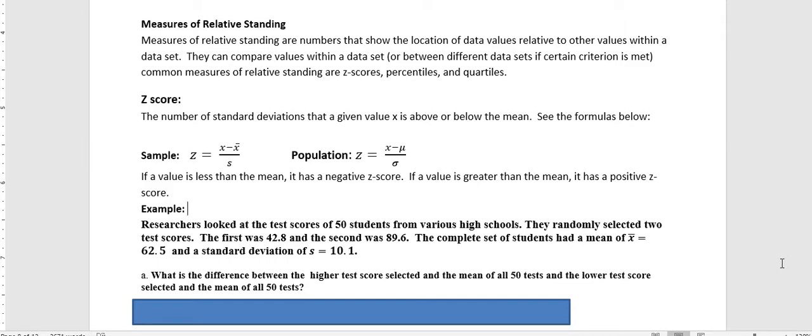The number of standard deviations that a given value x is above or below the mean is what a z-score is. The formulas are pretty simple. If you have a sample, you're going to use the standard deviation s, and if you have a population, you're going to use the standard deviation given by lowercase sigma.